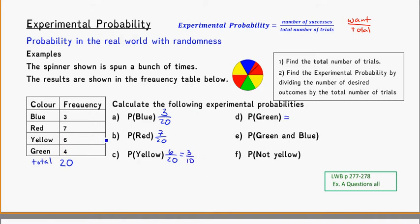The probability for green would be 4 out of 20, which would simplify to 1 fifth.